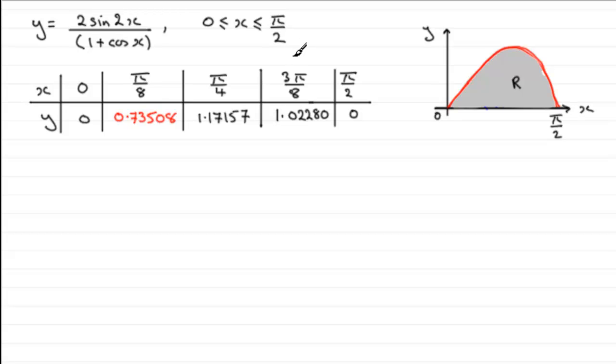Now for the next part, we're asked to use the trapezium rule with all the values of y that we've got in this completed table to obtain an estimate for this area r. And we've got to give our answer to 4 decimal places. Now I'm assuming that you're familiar with the trapezium rule. But if not, there's some tutorials on my website on this.